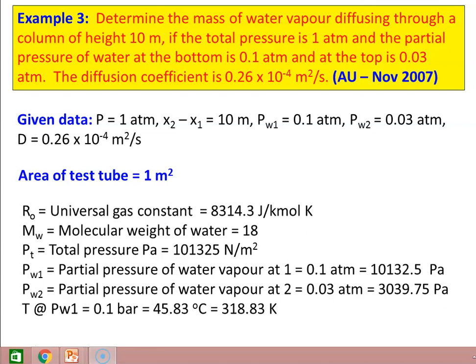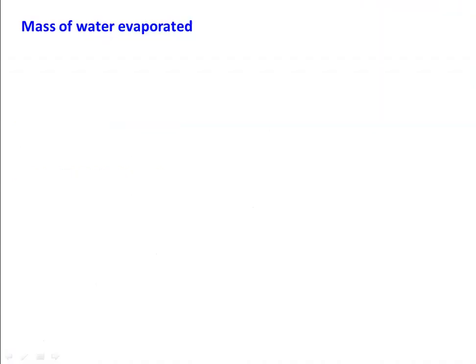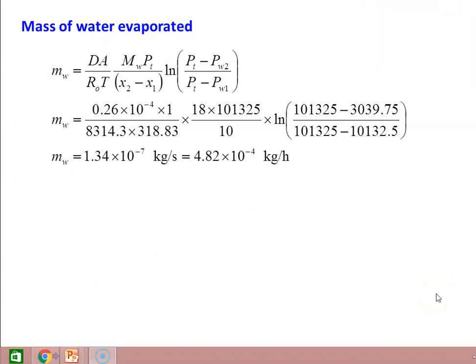Temperature T at PW1 equal to 0.1 bar is 45.83 degree Celsius, which is 318.83 Kelvin. Now substituting using the previous equation for calculating mass of water evaporated: MW equal to D times A divided by R0 times T, times molecular weight, times total pressure divided by x2 minus x1, times the logarithm of total pressure minus PW2 divided by total pressure minus PW1.